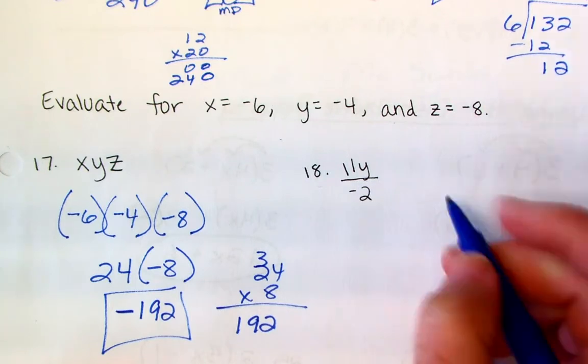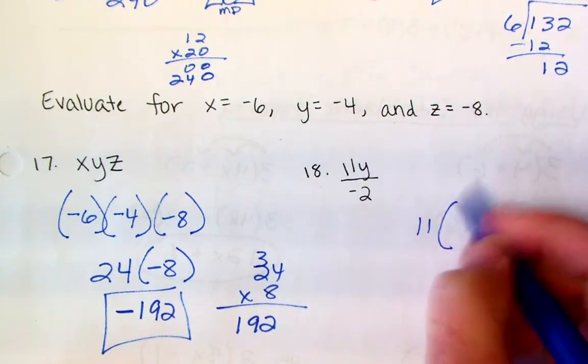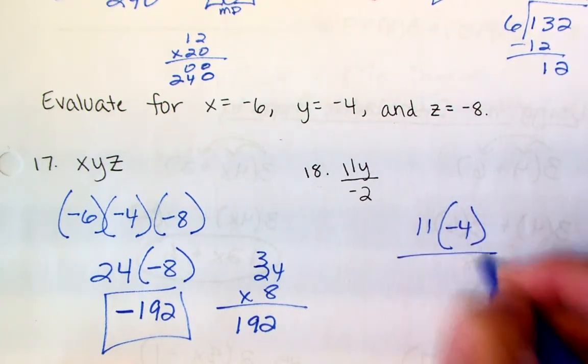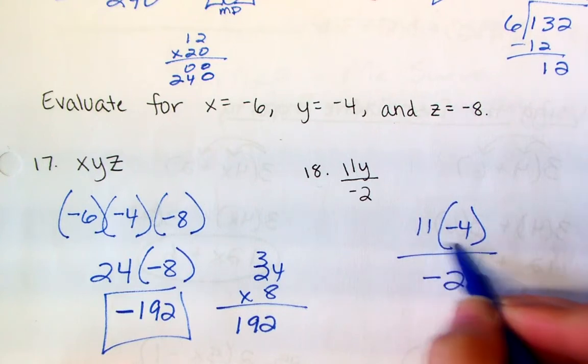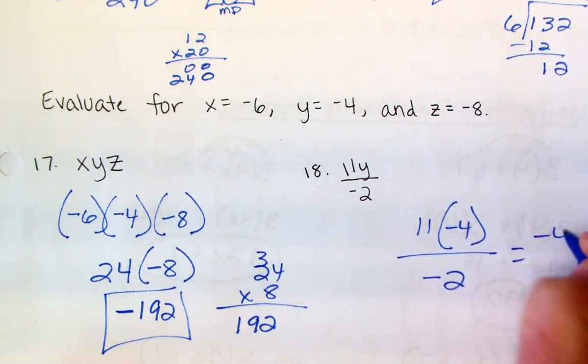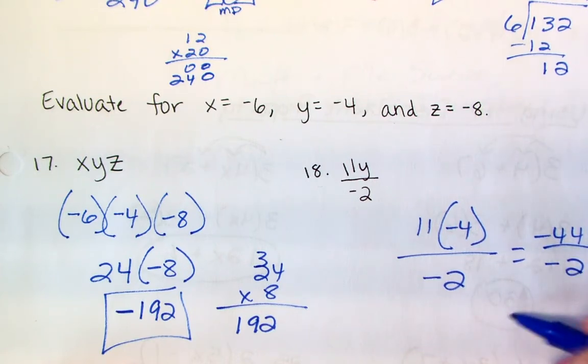And then for this last one, again, I'm going to substitute in for y. They give me negative 4. I'm going to do this first. So this is going to equal negative 44 divided by negative 2. So a negative divided by a negative is a positive. 44 divided by 2 is going to give me 22.